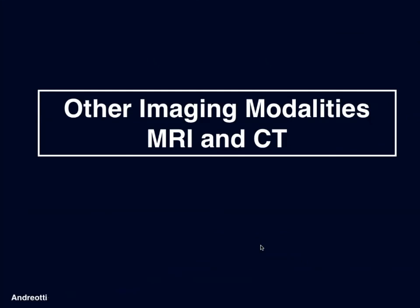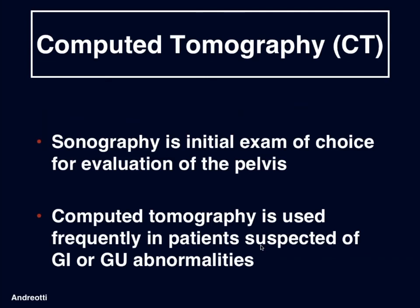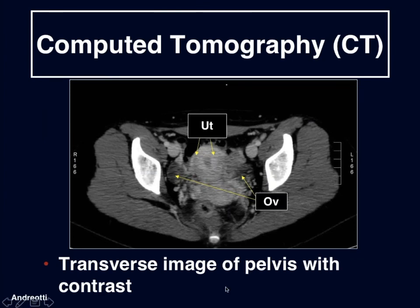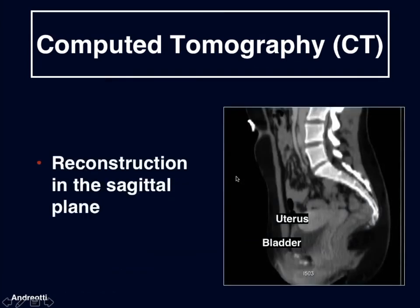We should also mention a couple other imaging modalities — MRI and CT. Sonography is the initial exam of choice for evaluation of the pelvis, but computed tomography is used frequently in patients suspected of GI or GU abnormalities. Here we have an example of a CT where we can see the uterus with some enhancement normally of the myometrium, and we can see ovaries on either side of the uterus. We can also reconstruct this in the coronal plane showing the uterus and the bladder. However, the detail of the organs using CT is really quite limited compared to the nicer architecture that we have when we use sonography.